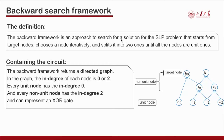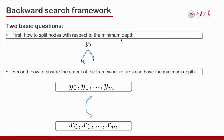We propose the backward framework formally. It is an approach that starts from target nodes, chooses a node interactively, and splits it into two nodes until all nodes are unit nodes. The target nodes are the output values of the matrix, and the unit nodes are the input values. The backward framework returns a directed graph in which the in-degree of each node is 0 or 2; every unit node has in-degree 0 and every non-unit node has in-degree 2, representing an XOR operation.